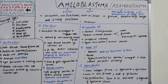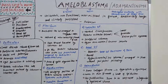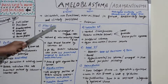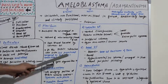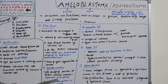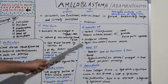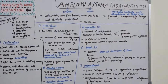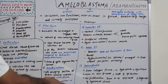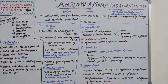Ameloblastoma is a lengthier topic, asked as a 14-mark question. You can build content by writing the histological types: follicular, plexiform, acanthomatous, granular, basal cell, and desmoplastic. Key points: follicular — nuclei polarized, resembles ameloblasts; plexiform — stellate reticulum less prominent; acanthomatous — squamous metaplasia; granular — coarse granular eosinophilic appearance; basal cell — resembles BCC; desmoplastic — compressed and fragmented hyalinized stroma.